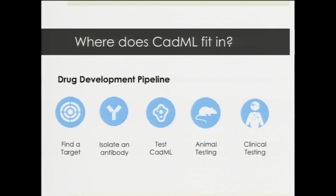Let's look at the drug development pipeline. Currently the steps are: identify a target, harvest antibodies from a mouse against that target, then do in-lab testing, animal testing, clinical testing, and finally produce an antibody therapy. CatML fits in after harvesting a mouse antibody — we use CatML to engineer the antibody to bind even better to its target than originally. This streamlines the path toward a high-affinity, effective antibody therapy through animal and clinical testing, and eventually produces a therapy that binds better to its target and hopefully eliminates diseases more effectively.